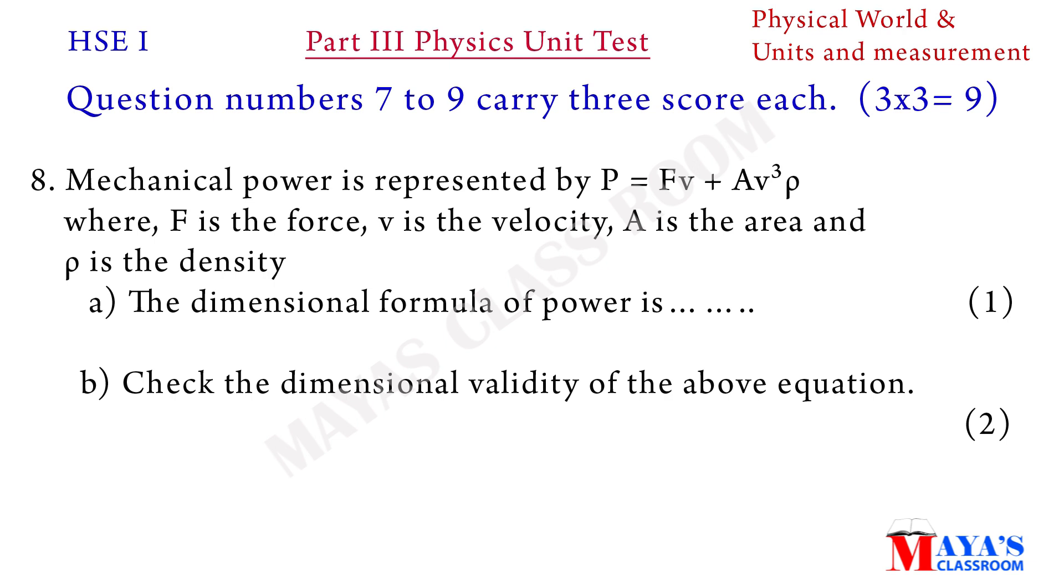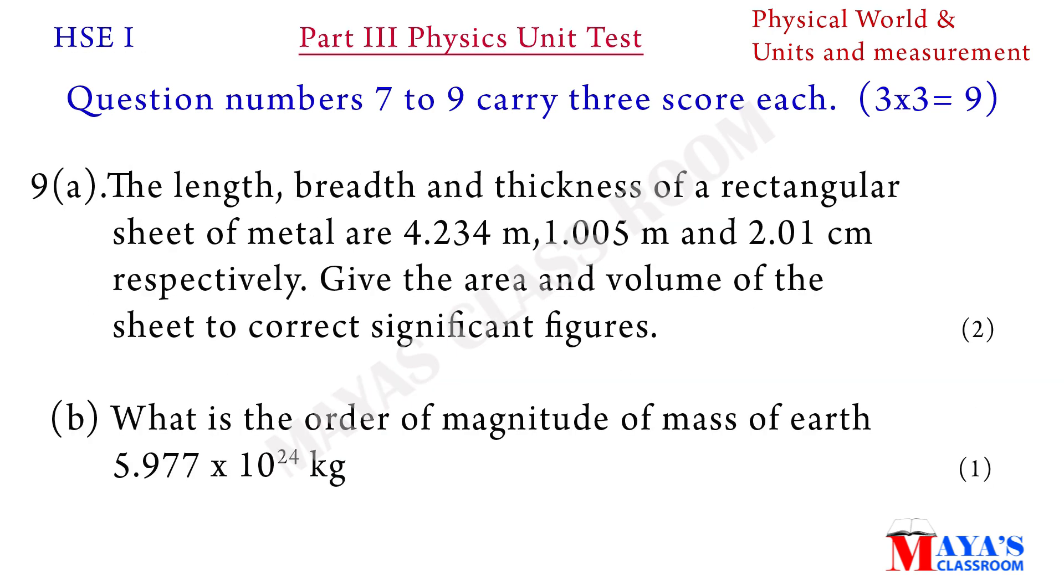Eighth question: mechanical power is represented by P equals FV plus AV cubed into rho, where F is the force, V is the velocity, A is the area, and rho is the density. A, the dimensional formula of power is blank. B, check the dimensional validity of the above equation.